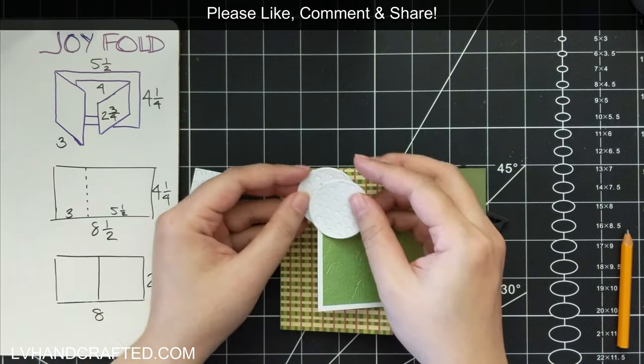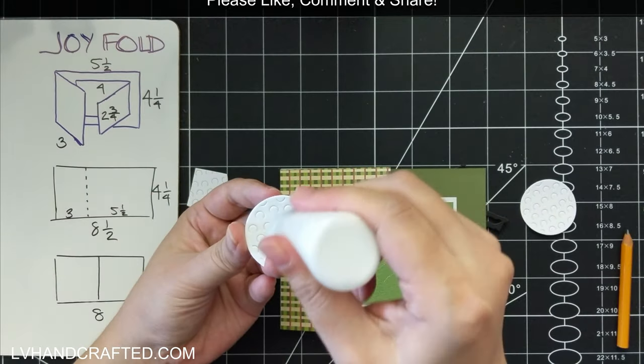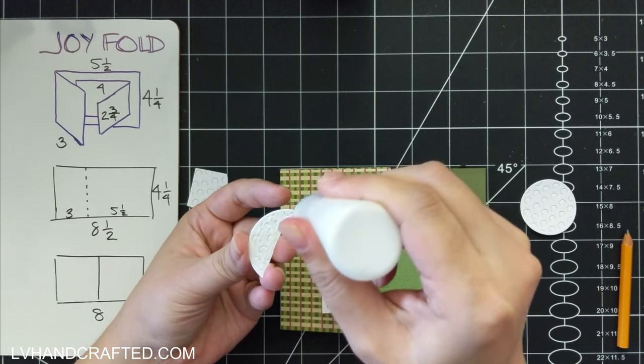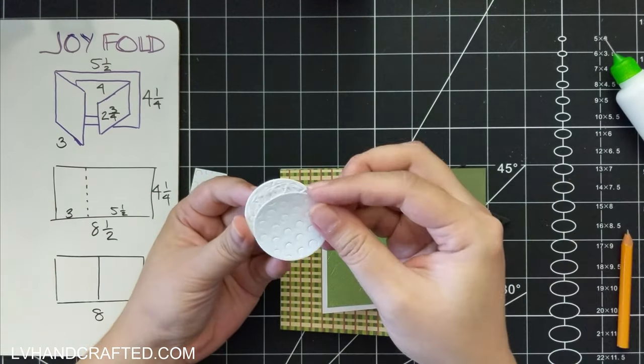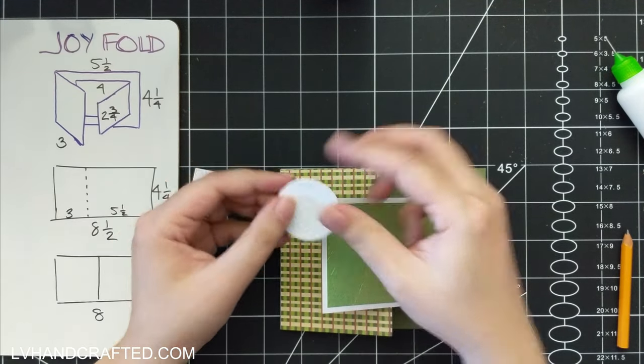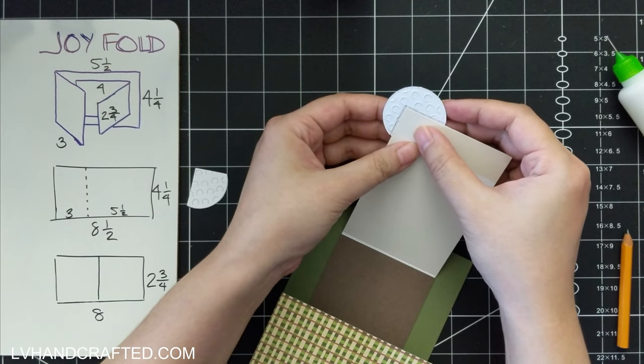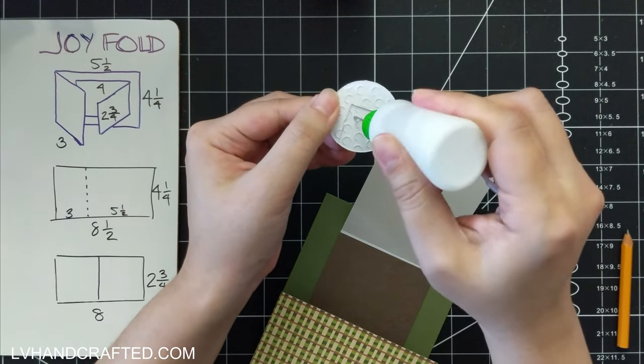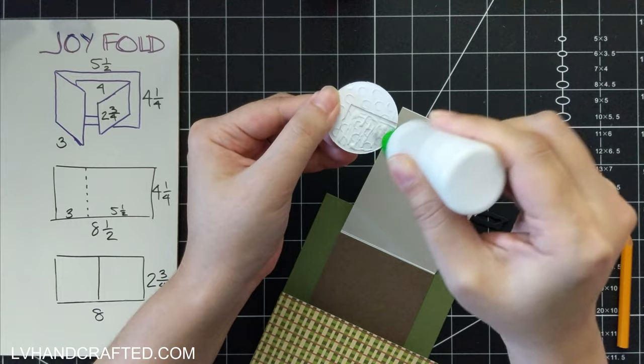And what I did was I lined it up where I wanted to put it and then I traced that corner so that I can cut it out. This piece here I am sandwiching in between two other layers of the golf ball.